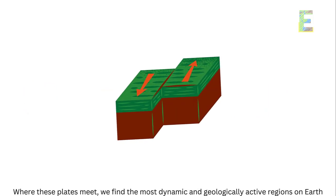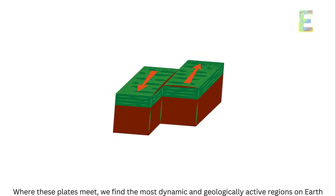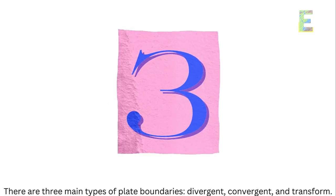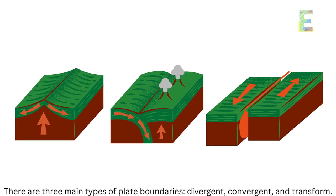Plate boundaries. Where these plates meet, we find the most dynamic and geologically active regions on Earth. There are three main types of plate boundaries: divergent, convergent, and transform.